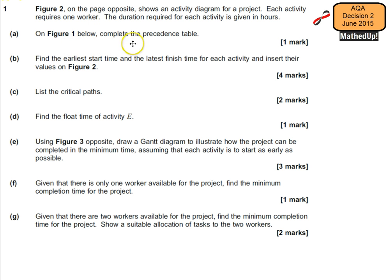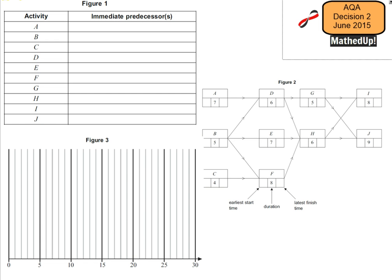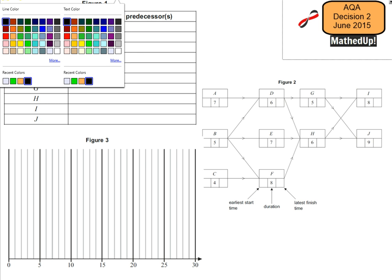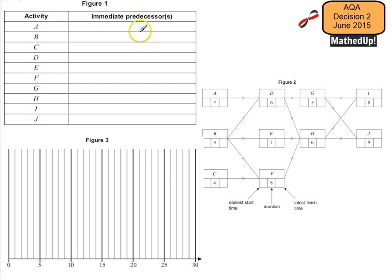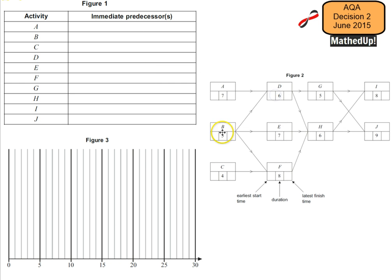Our first task is to complete the precedence table. All we're doing in this table is saying what needs to happen before each of these activities start. For activity A, B, and C, nothing needs to happen before they start, so we can just put a dash here, here, and here.